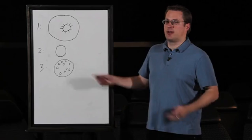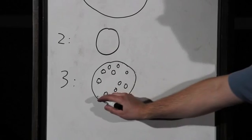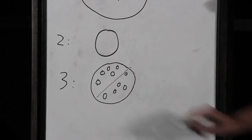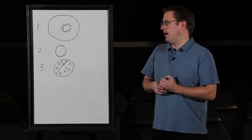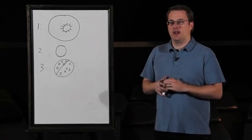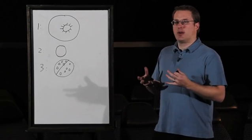And number three is it has to have cleared out its local orbit. It can't actually be in a band of asteroids. And that's kind of what dooms Pluto, and that's what also dooms some of our, there's one round asteroid called Ceres. It has to have cleared out its local orbit.